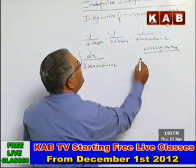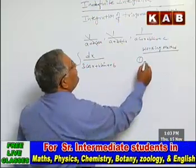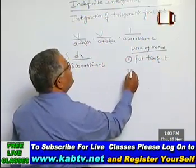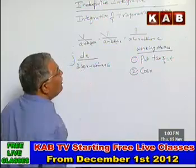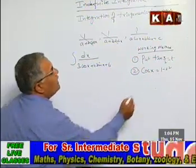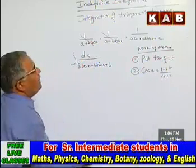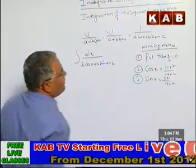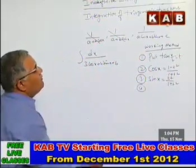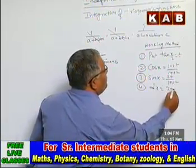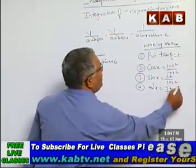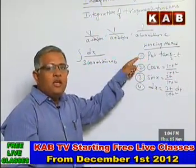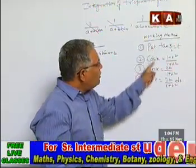Step 1: Put tan(x/2) = t. Step 2: Write cos x = (1 - t²) / (1 + t²). Step 3: sin x = 2t / (1 + t²). Step 4: dx = 2 dt / (1 + t²). These are the four substitution steps, which have been explained in an earlier session.